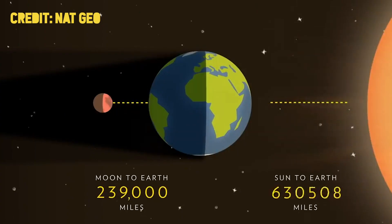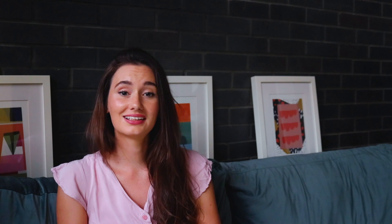Whether an eclipse is total or annular depends on the distance between the Earth, the moon, and the Sun. The Earth travels in an elliptical orbit around the Sun and the moon travels in an elliptical orbit around Earth, so the distance between these celestial bodies changes all the time. When the Sun is nearest to Earth and the moon is at or near its greatest distance, the moon appears smaller than the Sun in the sky. When an eclipse of the Sun happens in this situation, the moon will not appear large enough to cover the Sun completely, and a rim or ring of light will remain visible — this is an annular eclipse.